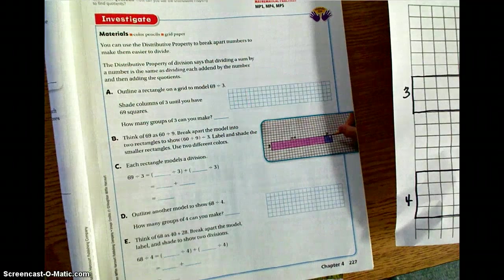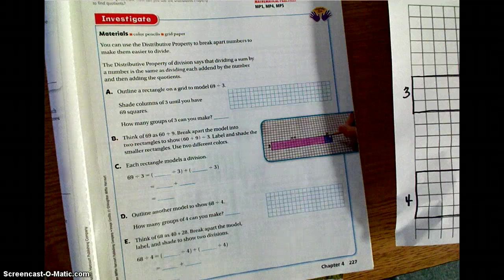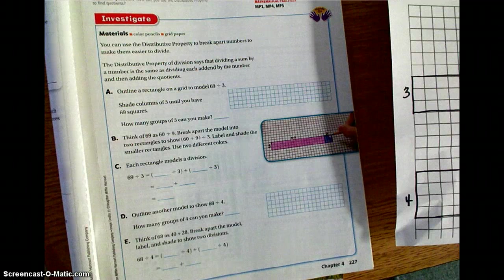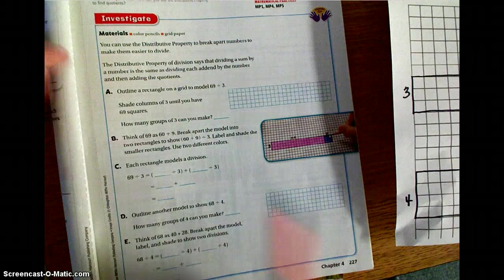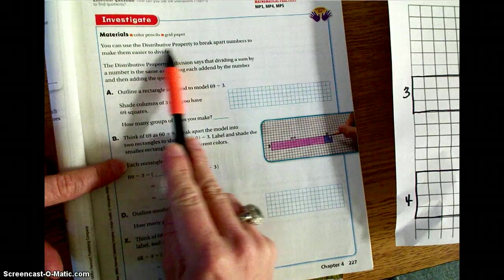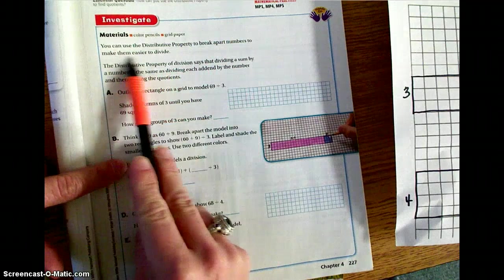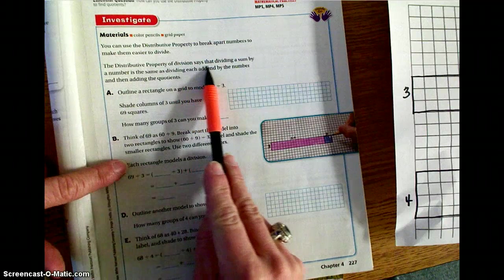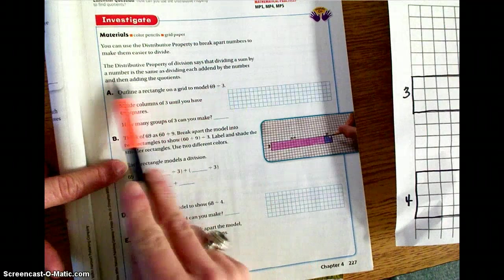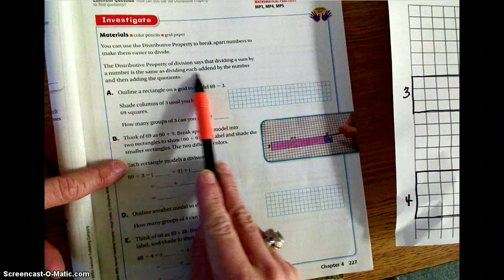Okay, in part A under the investigate, we are going to be using some graph paper. I am going to ask that you also use the graph paper that your teacher provides you. So if we read below, it says you can use the distributive property to break apart numbers to make them easier to divide. The distributive property of division says that dividing a sum by a number is the same as dividing each addend by the number and then adding the quotients.